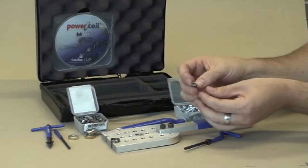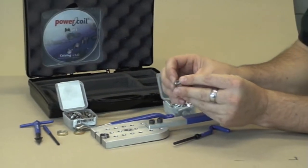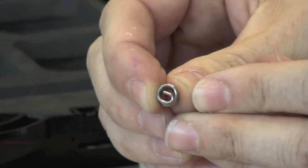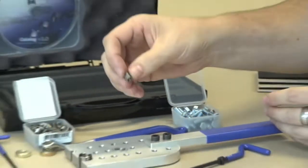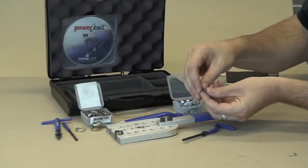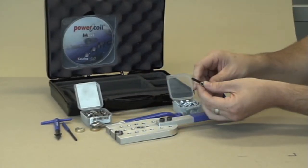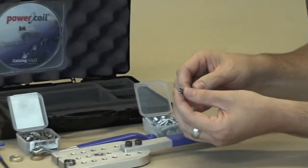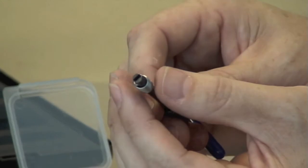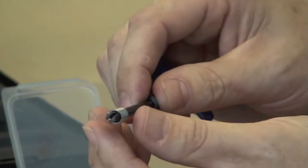A wire thread insert has a little hook on the end called the tang. That always points down towards the installation. It's very important to know that when you are installing, you get the installation tool and the tang is pointing downwards. The tang sits through that slot on the end of the installation tool.